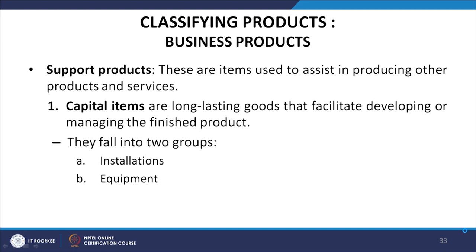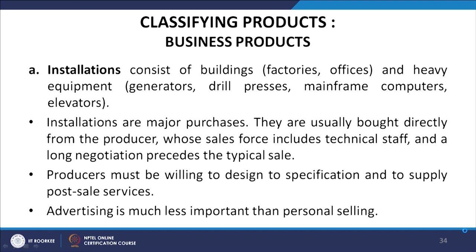Support products are items used to assist in producing other products and services. The first type is capital items — long-lasting goods that facilitate developing or managing the finished product. They fall into two groups: installations, which consist of buildings such as factories and offices and heavy equipment like generators, drill presses, mainframe computers, and elevators. Installations are major purchases usually bought directly from the producer; long negotiation precedes the typical sale, and producers must be willing to design to specifications and supply post-sale services.